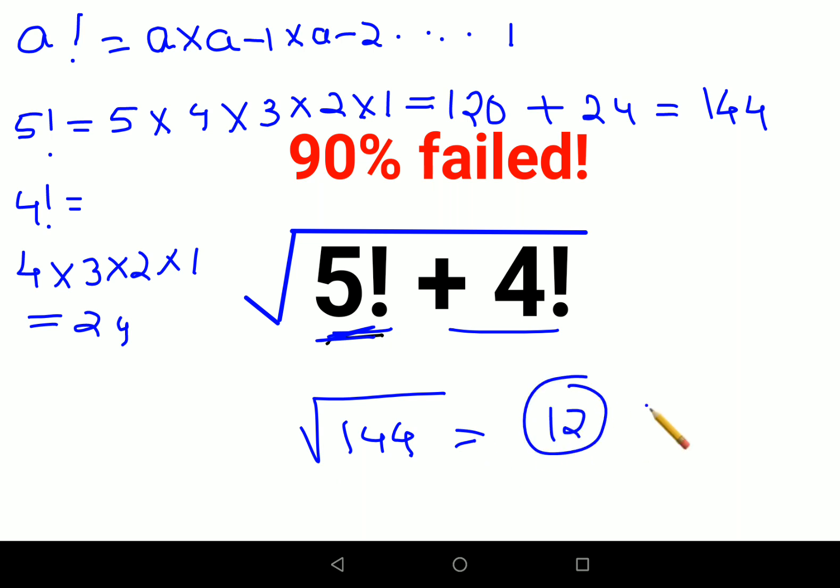Please don't make the mistake of writing plus minus 12. That is absolutely wrong. Now please understand when you want to find a square root, only if the case was x square was equals to 144.